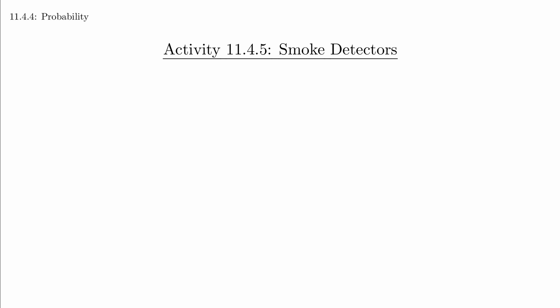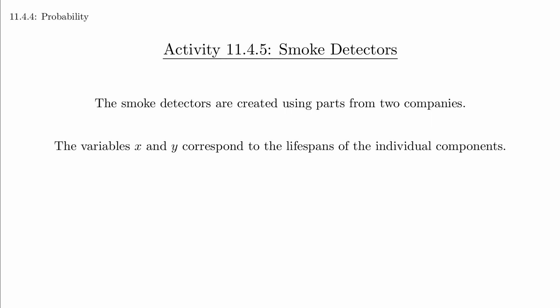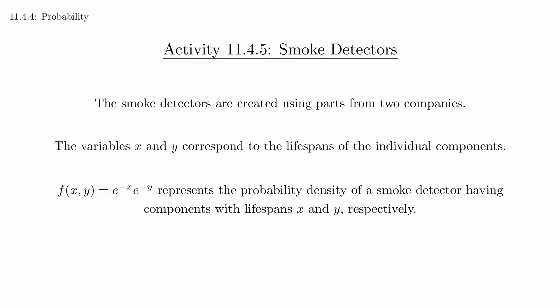Activity 11.4.5 is a good activity for introducing many of the essential concepts. A company is making smoke detectors and they require components from two different suppliers. Each component will have a lifespan which is some sort of probabilistic value because that's just how things work in manufacturing. The joint probability function gives the probability density for any specific combination of lifespans.